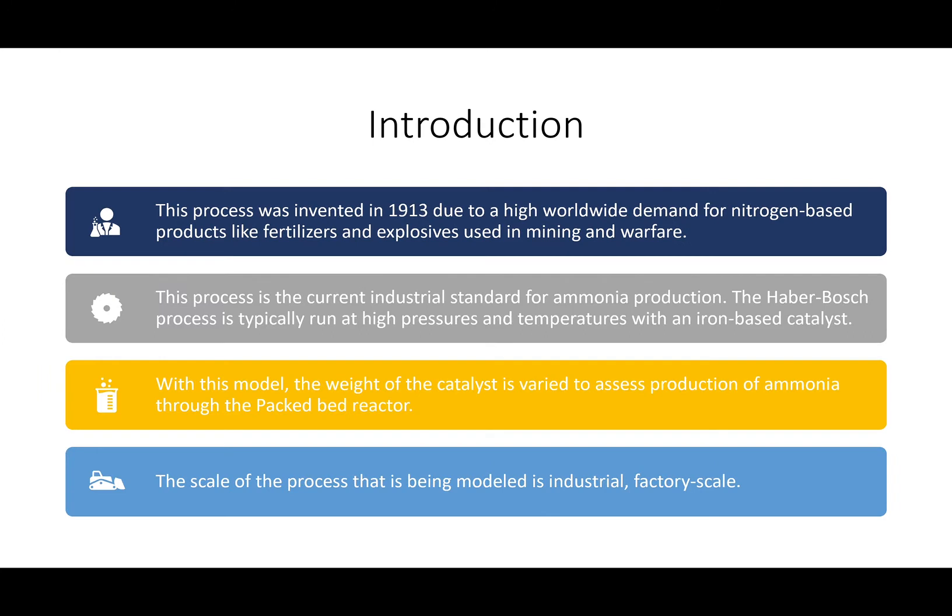For the introduction of the Haber-Bosch process, it was created due to the high demand of nitrogen-based products like fertilizers and explosives during the war in 1913. This process is currently the standard for ammonia production. It is run at high pressures and high temperatures with an iron-based catalyst.